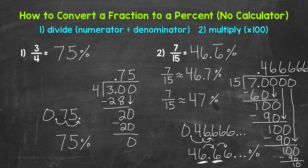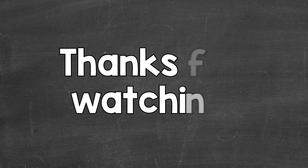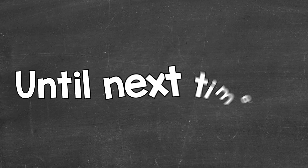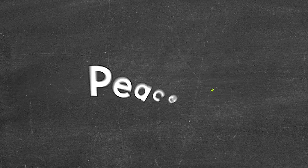So a few different options there as far as working with that repeating decimal. When we come across repeating decimals, we can still write them as a percent. Or even if we come across long decimals that don't repeat, we're able to round those if we need to. So there you have it — that's how to convert a fraction to a percent by hand, without a calculator. I hope that helped. Thanks so much for watching. Until next time. Peace.